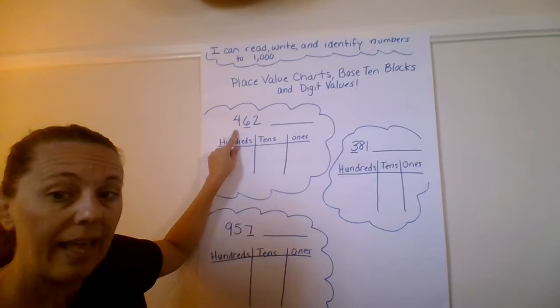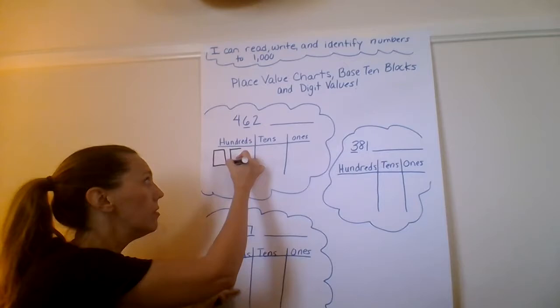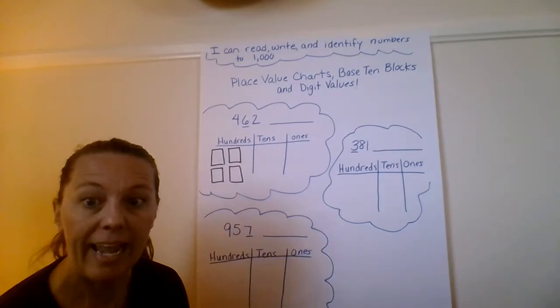So when I have a number and my directions say draw the base 10 blocks in the place value chart, here's how we do it. I'm going to look at this number 462. First I'm going to look at the hundreds. How many hundreds flats am I going to draw? Well, the digit is four. So I'm going to draw one, two, three, four.